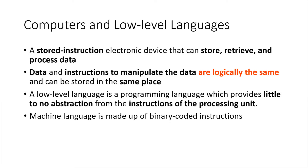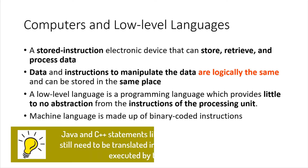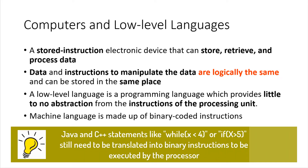This brings us to the concept of a low-level language. A low-level language is a programming language which provides little to no abstraction from the instructions of the processing unit. The instructions in machine language, which is a type of low-level language, are actually binary values that get put directly into the circuits of the processor, as opposed to, say, C++, where high-level English-like statements such as 'while x is less than 4' or 'if x is greater than 5' first need to be translated into machine language to be put into the circuits of the processing unit.